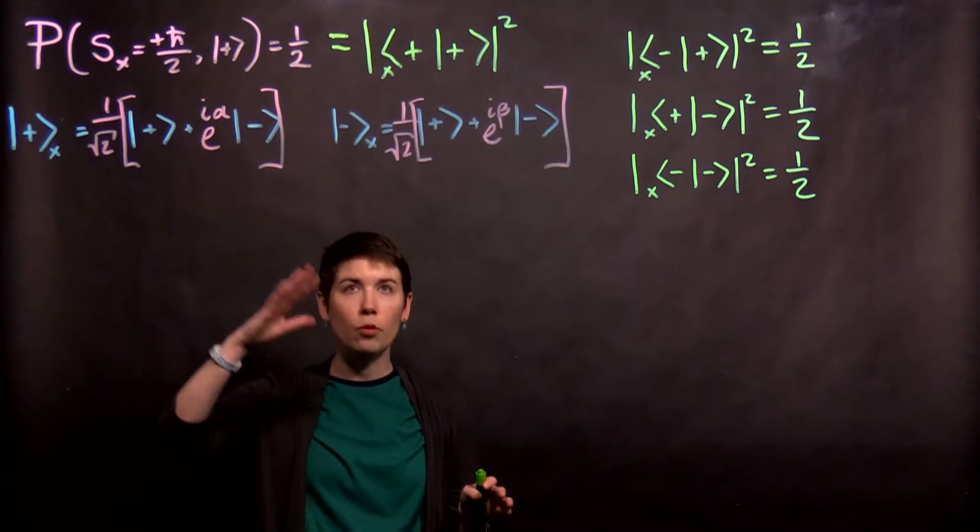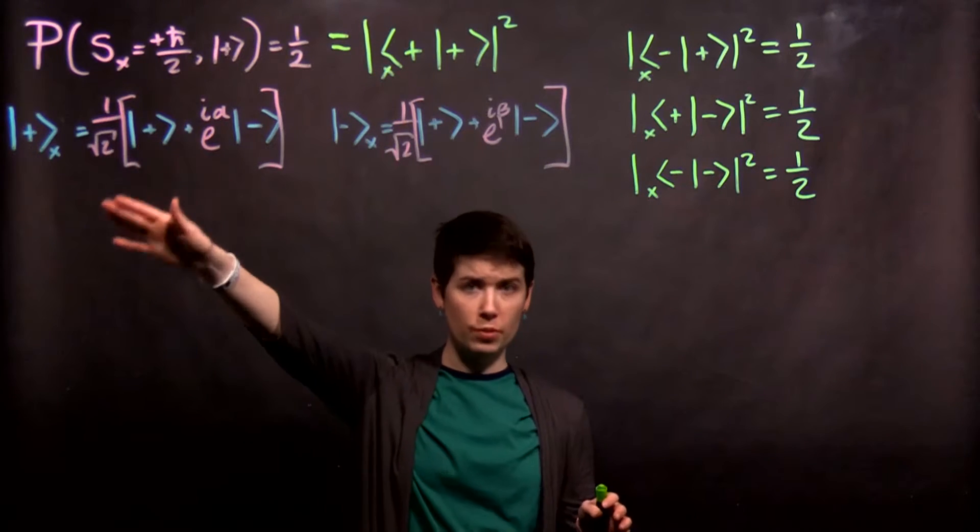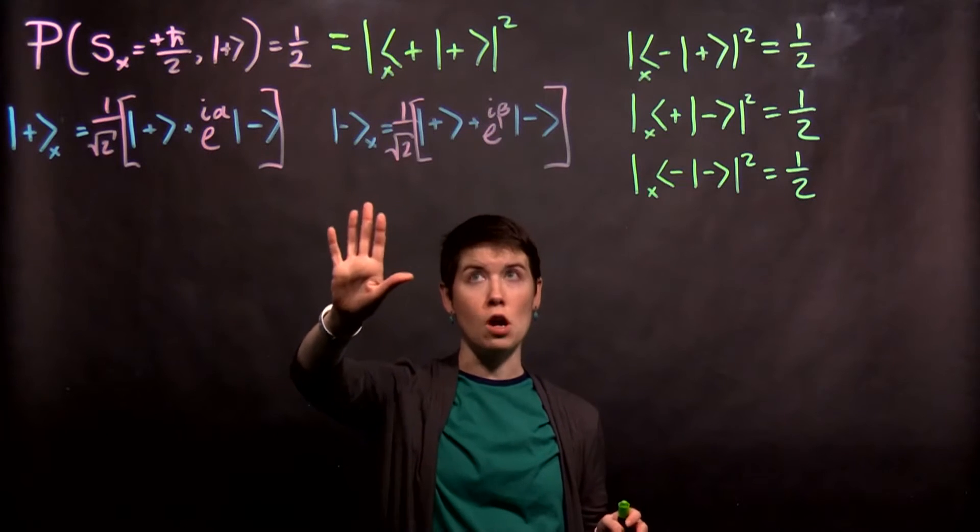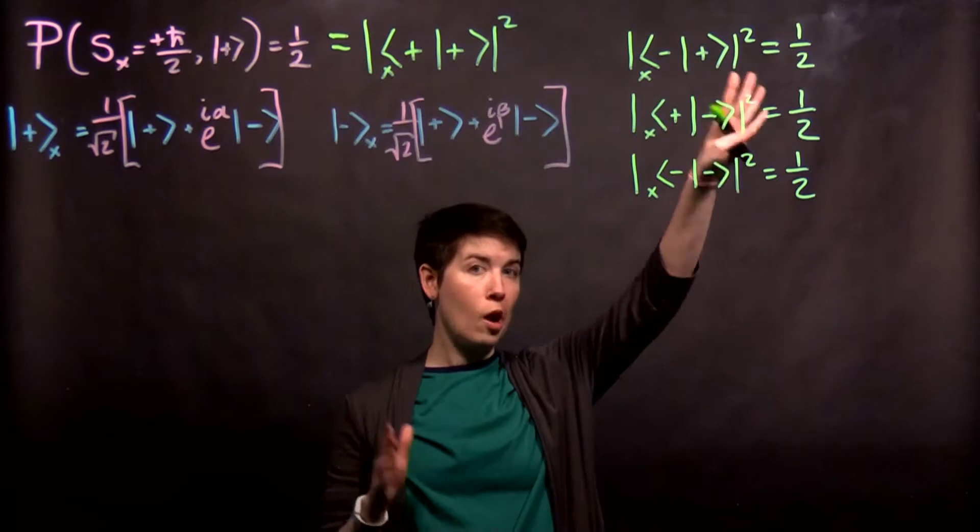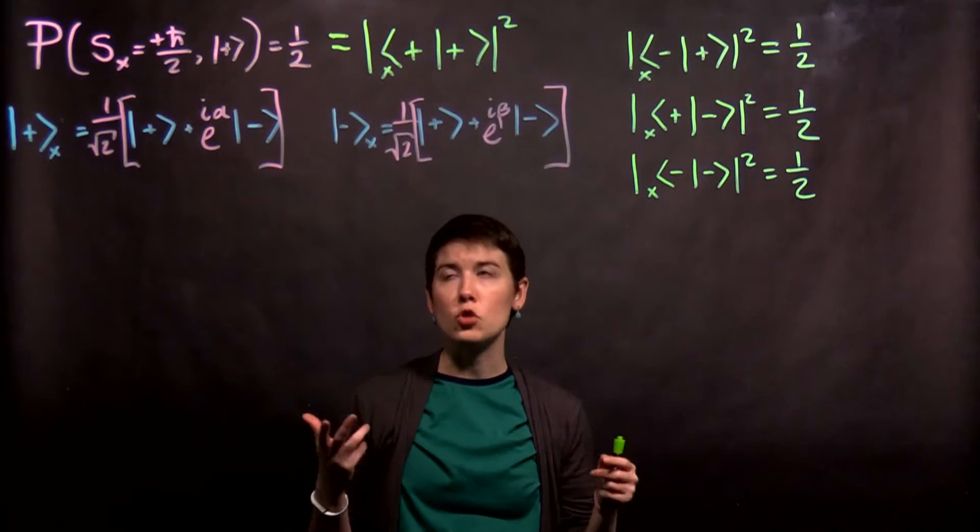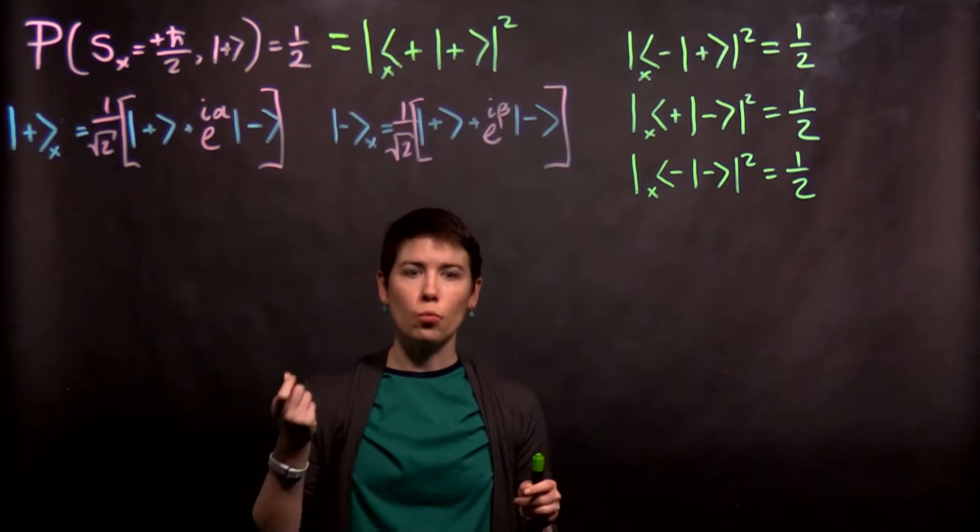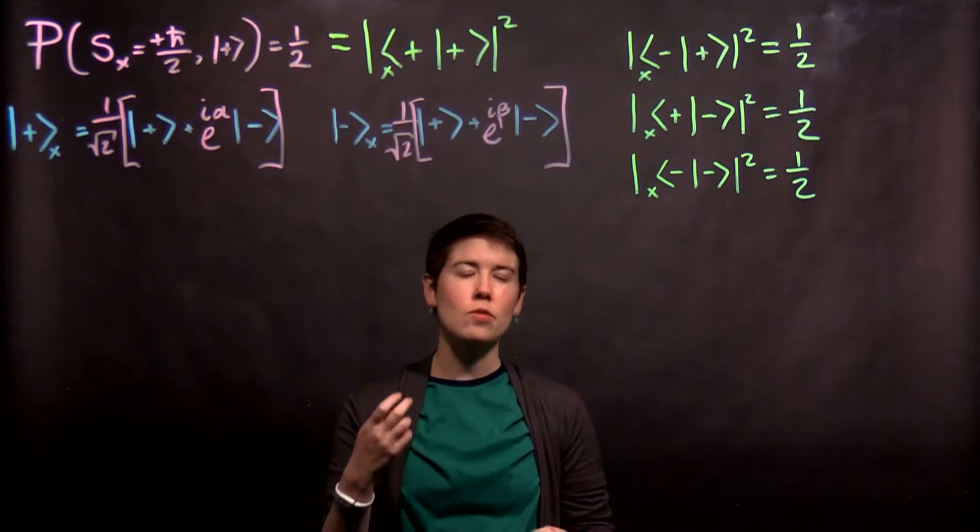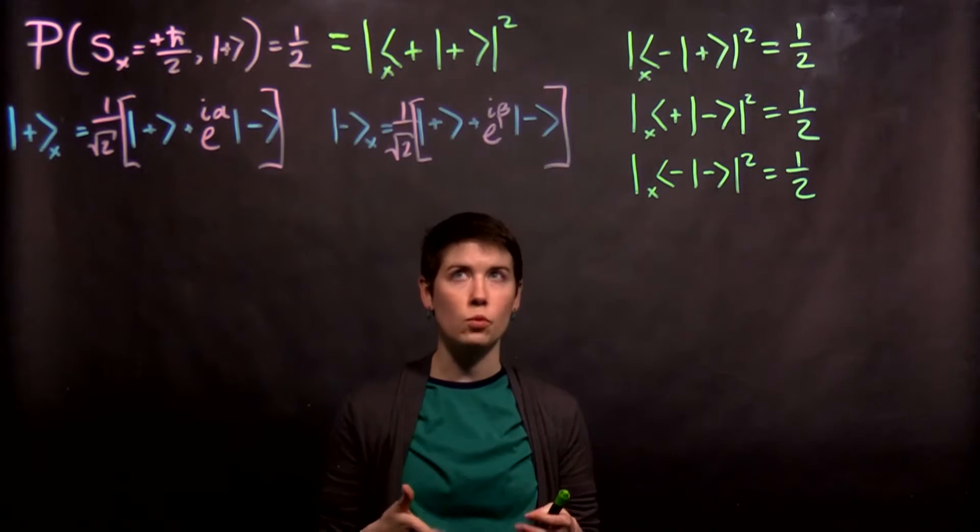This is the third video stepping you through how we determine what our spin states in the x direction are. We've used experimental measurements to come up with a constraint on the overall coefficients, and in the last video I argued that there's some complex phase that we have to account for.